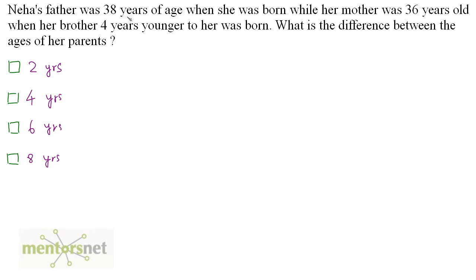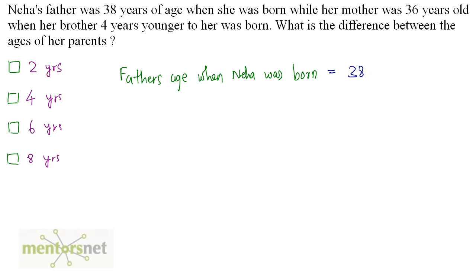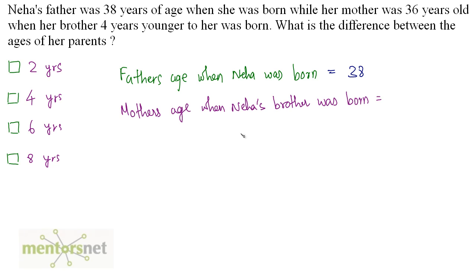Neha's father was 38 years of age when she was born, while her mother was 36 years old when her brother, 4 years younger to her, was born. What is the difference between the ages of her parents? Neha's father's age when Neha was born equals 38 years, and the mother's age when Neha's brother was born was 36 years.